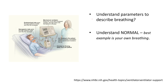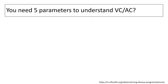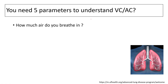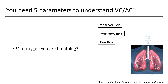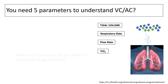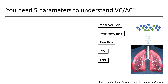Try to understand what the normals are, and the best way to understand this will be examining your own breathing pattern. The most important thing is to observe your patient breathing before the intubation. So what are the five parameters to understand volume assist control? How much air do you breathe in? How many breaths do you take in a minute? How fast is your inspiration? How much percent of oxygen you are breathing? And lastly, how much pressure do you need to keep your lungs inflated? If you understand these five parameters you should be able to control somebody's breathing on the ventilator using volume assist control.